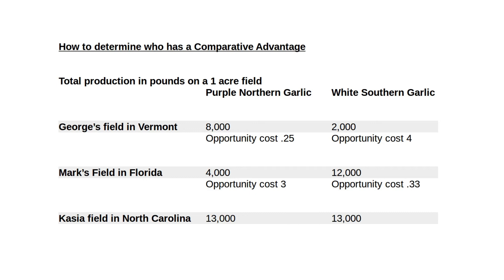You can clearly see that Mark has the lowest opportunity cost of growing white southern garlic, whereas George has the lowest opportunity cost of growing this beautiful northern purple garlic. Kasia's field — she has the absolute advantage. Ceteris paribus, the soil is the same condition. She could outproduce both given the same amount of resources: one acre, seeds, everything the same. So she has absolute advantage. But right now we're just looking at how you calculate the comparative advantage of growing in two different fields.